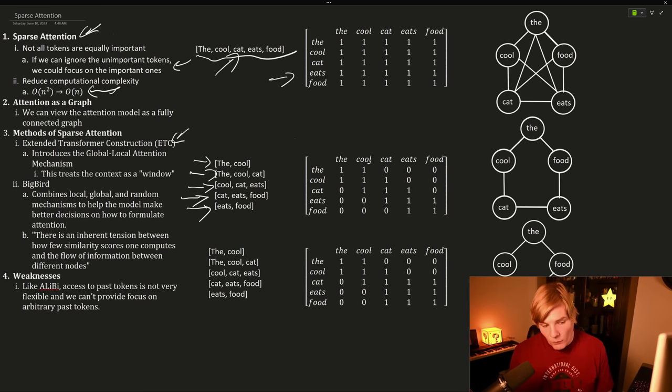And that results in this connectivity matrix, which is a lot lighter. And the more tokens that we have in our vocabulary, the more benefit we get out of this reduction.